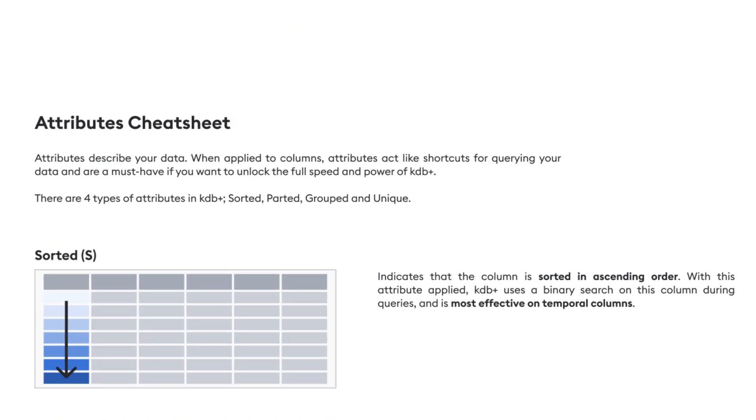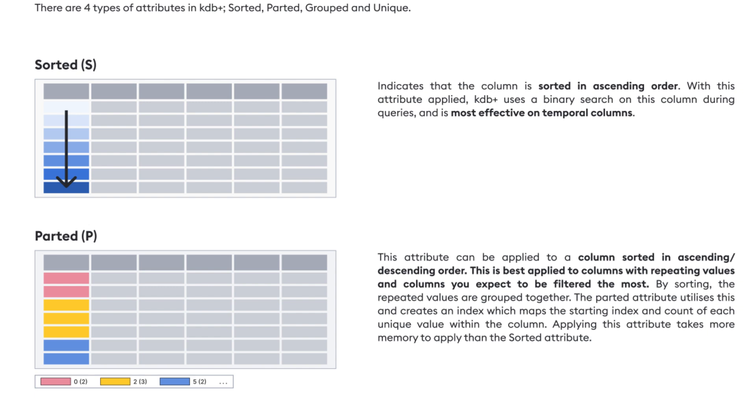There are four types of attributes. First, sorted, which sorts the column in ascending order — really good when you have values that won't repeat, like a timestamp column. Next is parted, which is like the next level up from sorted: it does a further step after sorting to group all repeating values together, giving each unique value an index for lookup. It's ideal for that identifier or ID column. Applying the parted attribute requires more memory than sorting alone. This extra memory cost is acceptable for end-of-day or interval behaviour in the IDB and HDB since it happens only once. But with the RDB, this would happen every time you get a new record, so it's generally not recommended to have sorted or parted attributes on your RDB.